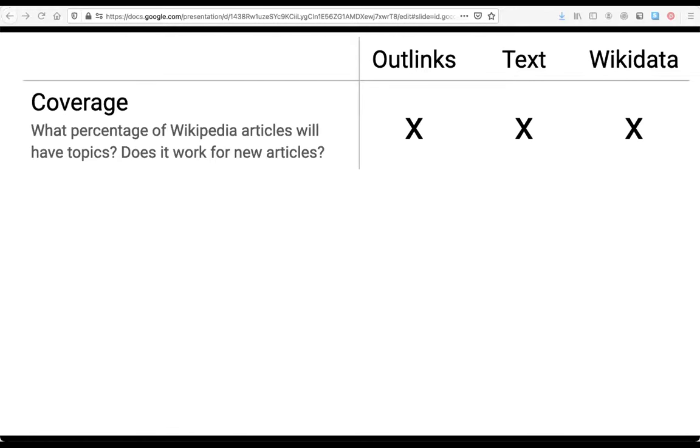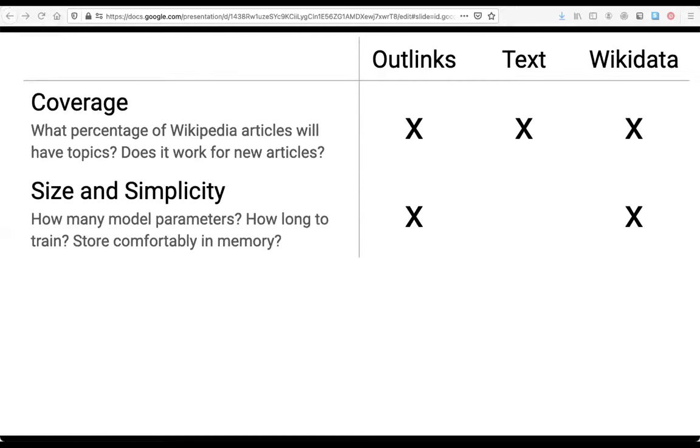Our first principle was coverage. We wanted a model that would work for almost any Wikipedia article in any language, even if it was a fairly new article. And we're focusing on three approaches here, outlinks, text, and Wikidata, because they all do pretty well here. All articles have text, almost all have links, and almost all are linked to a Wikidata item. Next was size and simplicity. So how many model parameters? How long to train the model? Does it store comfortably in memory? Things like that. Here, the outlinks and the Wikidata-based models do well. They use a relatively small vocabulary that's based on Wikidata. It covers every language of Wikipedia. They don't require language parsing. This means you can build a single model for all languages. The text-based approach requires individual preprocessing, models, probably word embeddings for each language, and this is far harder to scale.